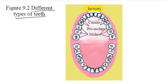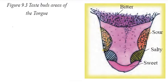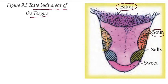You can see here the different types of teeth: the first one is the incisor, then the canine, then the premolars, and the molars. Now, it is the tongue and the taste areas of the tongue. The bitter area is at the back, the sour area is on the sides, the salty area is also on the sides, and in front of the tongue is the sweet area.